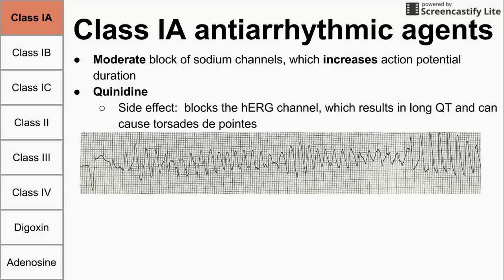If you have long QT, that always puts you at risk for torsades de pointes, shown in that EKG. It's a twisting of the spikes — the EKG lead goes up and down above the neutral axis very rapidly. It's very dangerous and could progress to ventricular fibrillation and cause sudden cardiac death.